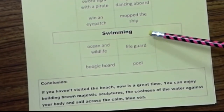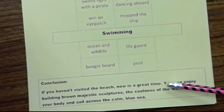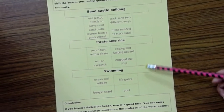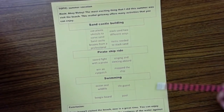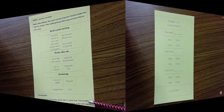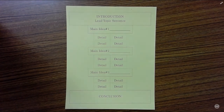The expository piece ends with a conclusion that mentions all three main ideas again, which is what students are expected to do. Once your child has organized their thoughts in the expository pillar, they are then expected to write a rough draft of their expository piece.